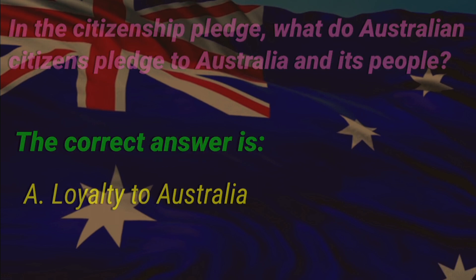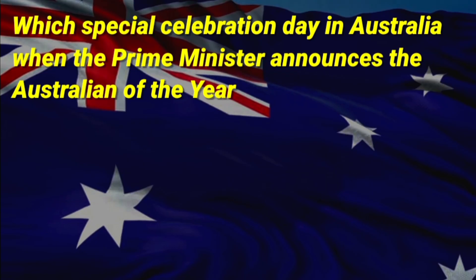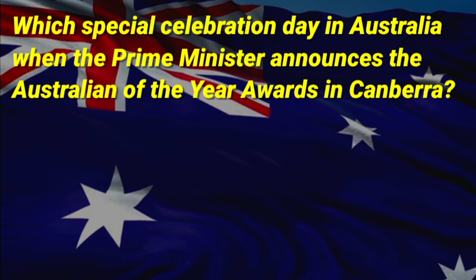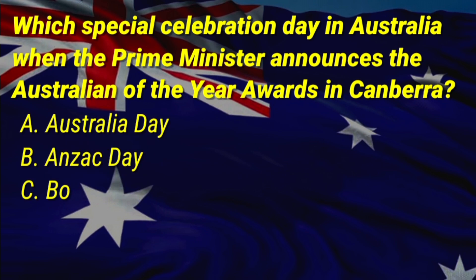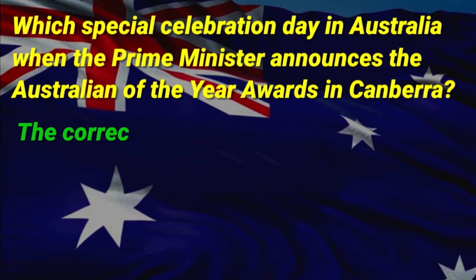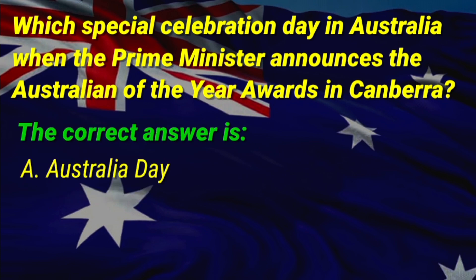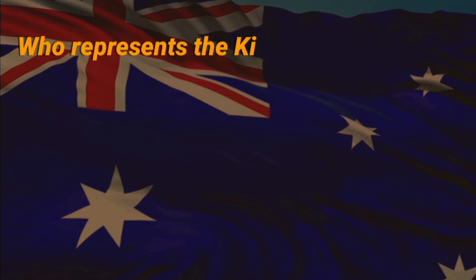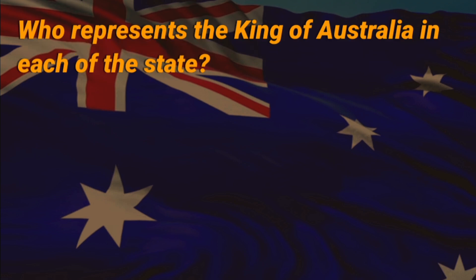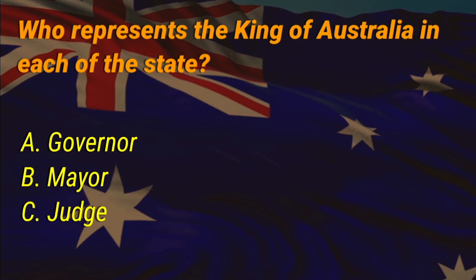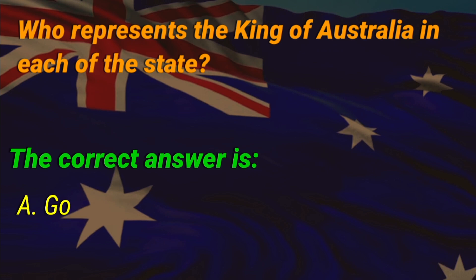Which special celebration day in Australia is when the Prime Minister announces the Australian of the Year awards in Canberra? A: Australia Day, B: ANZAC Day, C: Boxing Day. The correct answer is A, Australia Day. Who represents the King of Australia in each of the states? A: a governor, B: a mayor, C: a judge. The correct answer is A, governor.